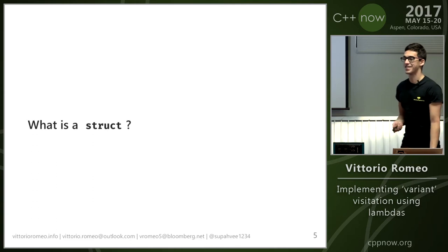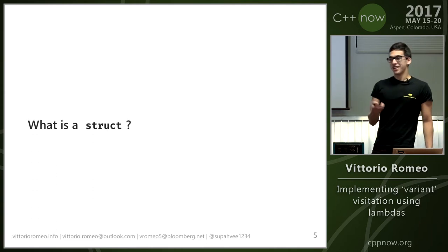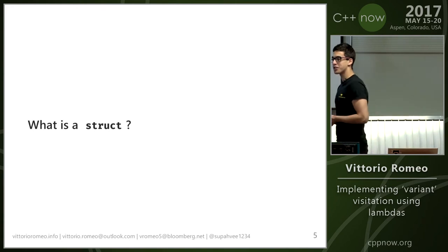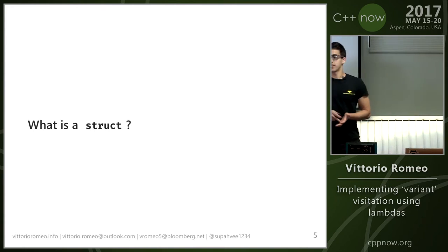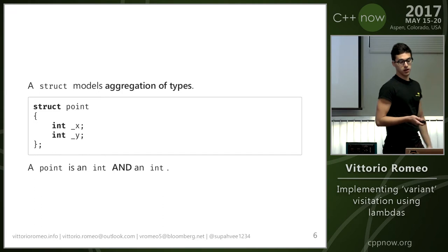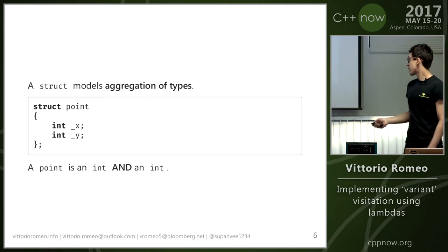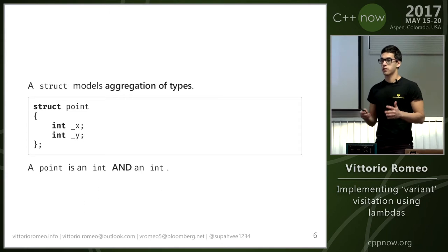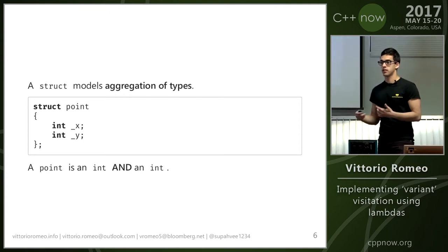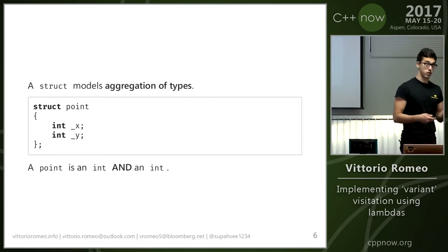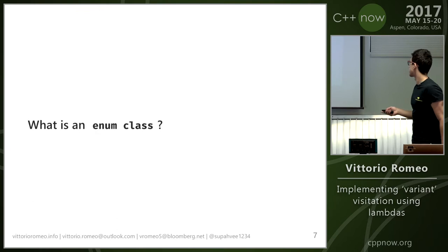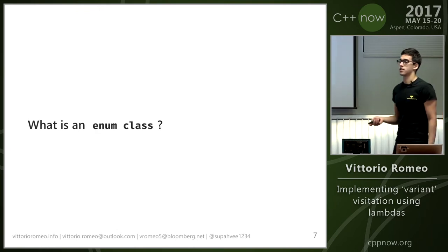A struct is a class with everything public — a more formal definition would be an aggregate data type, an aggregate of types. You could say it's a product type, and it's basically an aggregation of types where the number of possible states is the product of the number of states of every single type inside the struct. For example, a point is an int and an int. What is an enum class?